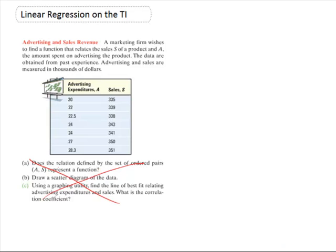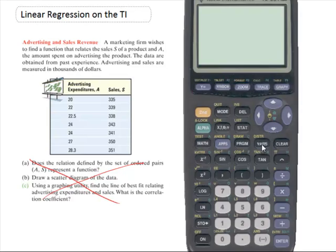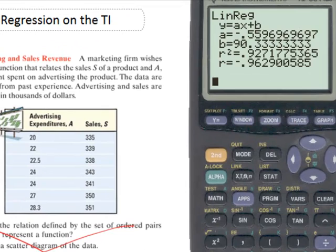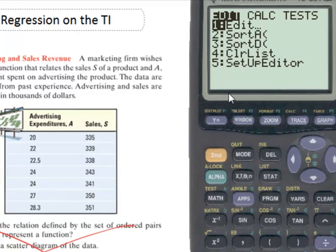The big thing I want to do is go through the TI. So you go to STAT. I've got to turn it on. STAT Edit, so Edit's the first one. You just hit enter.